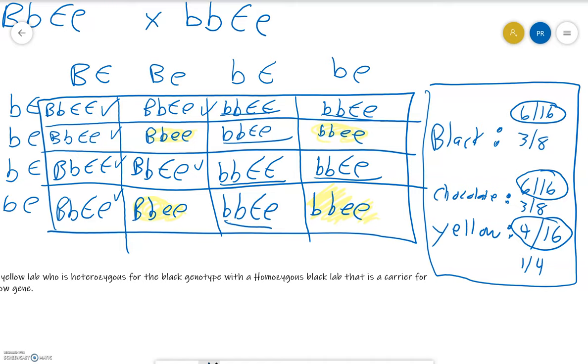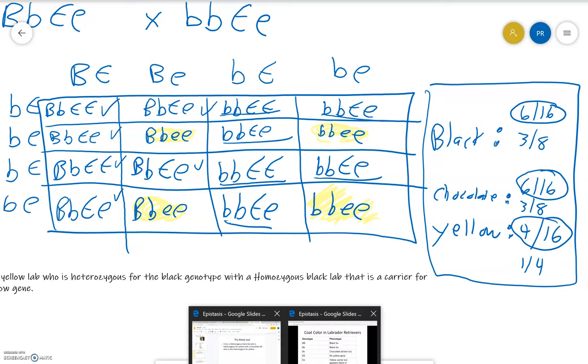So guys, that's epistasis—two or more genotypes controlling the same phenotype. I think it's interesting. This definitely practices the Mendelian genetics with you as well as doing that dihybrid cross.